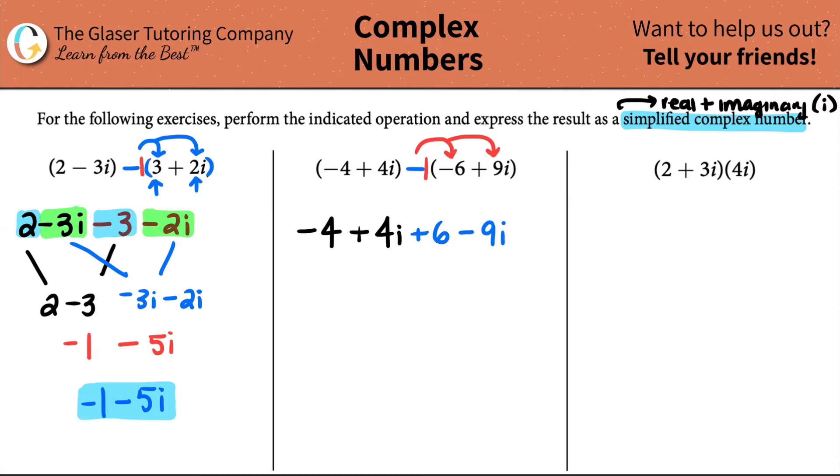Now all we have to do is group together the like terms. I see that I have a negative four and I have a plus six. So they go together. Negative four plus six, that's a two. And then I have a plus four i hooking up with a minus nine i. Four i minus nine i, that is negative five i. Four minus nine is negative five.